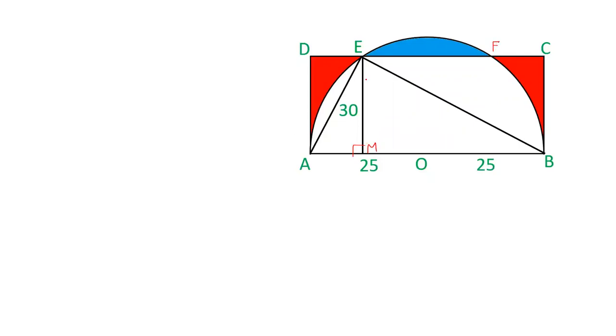So first of all we will find out the length of EM. Now in triangle ABE, angle AEB is 90 degrees because this is the angle in semicircle. Triangle ABE is right angle triangle and therefore AB² = AE² + BE². AB is given as 50, AE is given as 30, and we have to calculate BE.